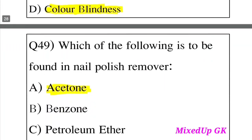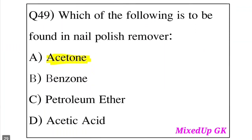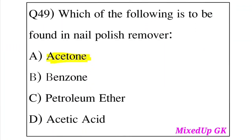Question 49: Which of the following is found in nail polish remover? Option A: Acetone. Option B: Benzene. Option C: Petroleum. Option D: Acetic acid. The answer is Option A, Acetone. Acetone is used in nail polish remover.